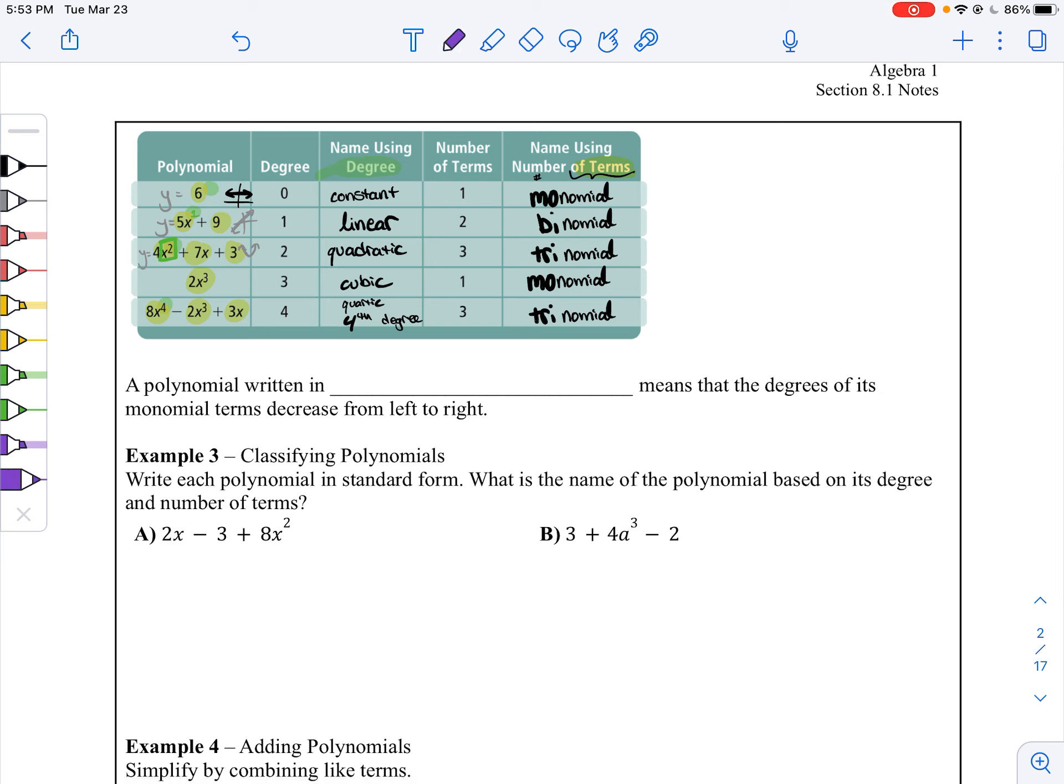I talked a little bit about standard form. To put a polynomial in standard form means that the exponents, so degrees, of course, is your exponents, the exponents go from biggest to smallest, go from left to right. Exponents go big to small. That's what it means to be in standard form.